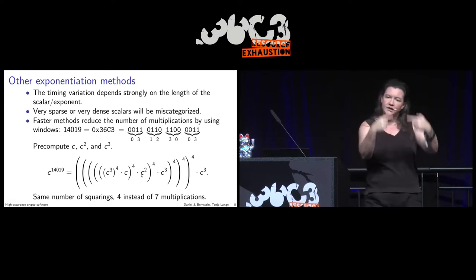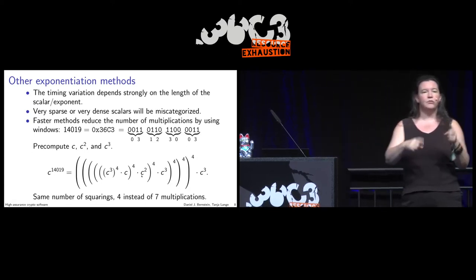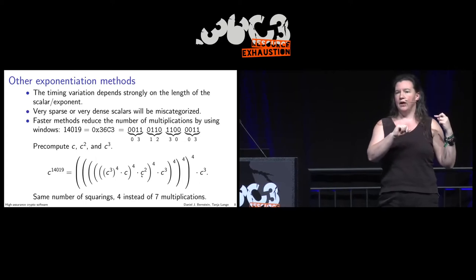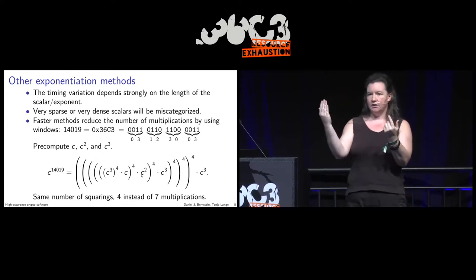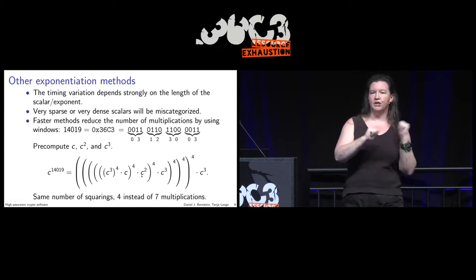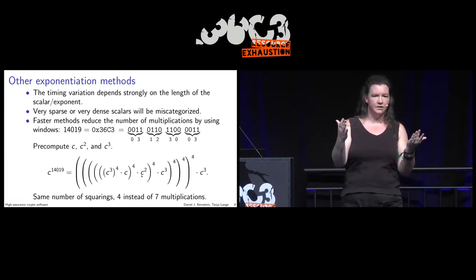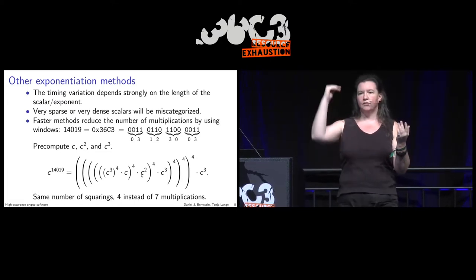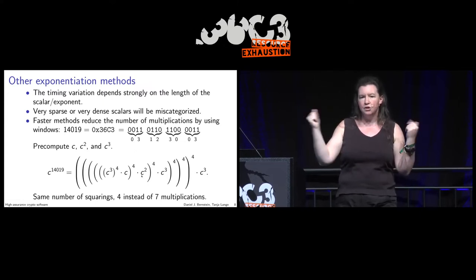We raise to the fourth power. This is like the previous loop, only we do it faster, because we look at the value of the next bit to determine what operation to perform.